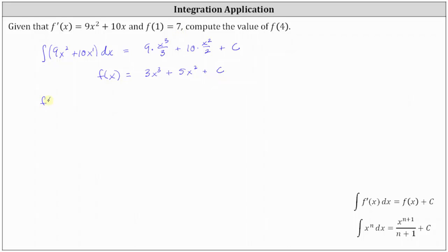So if f(1) = 7, this tells us the function value f(x) equals 7 when x equals 1, which means on the right we have 3 times the cube of 1 plus 5 times the square of 1 plus c.